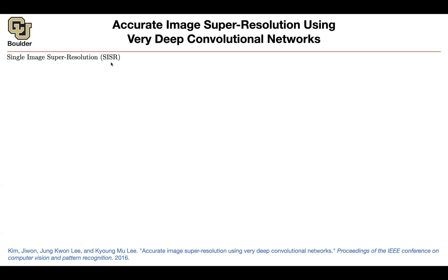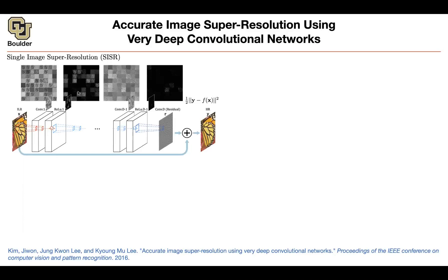You're going to hear SISR a lot, as it stands for Single Image Super Resolution. The idea of this paper and the next one is that when you do a bicubic interpolation of your low resolution image, that's already a good approximation of the high resolution one.